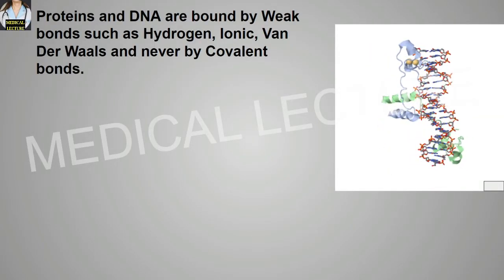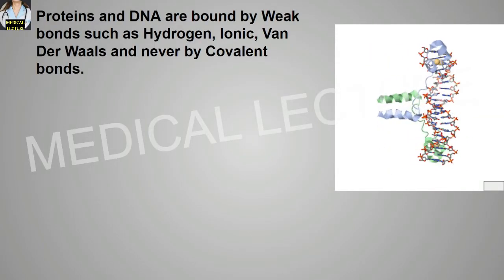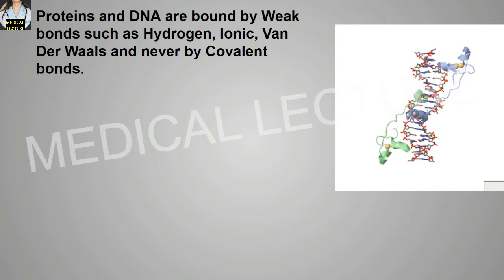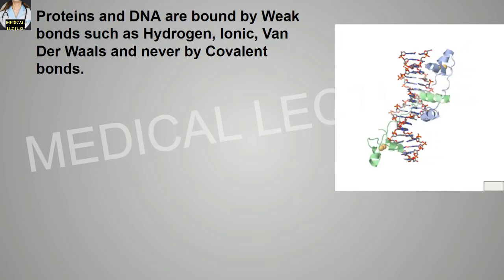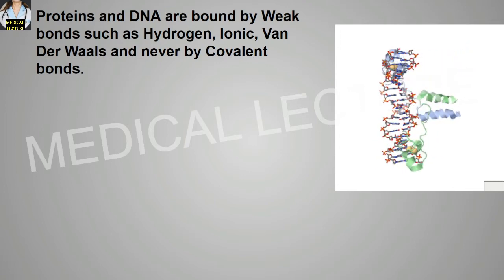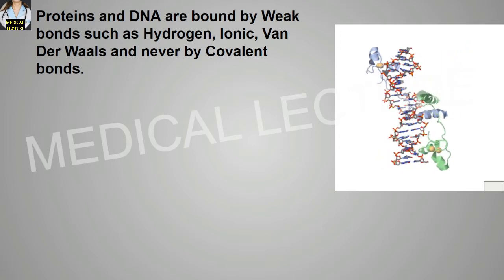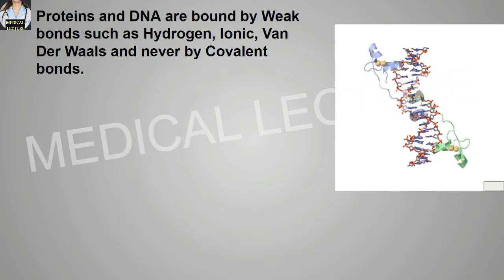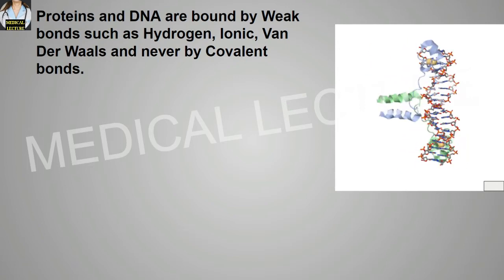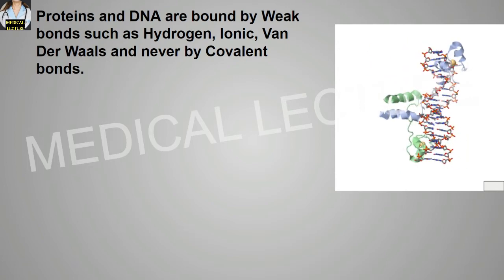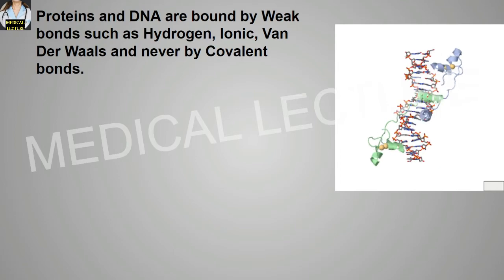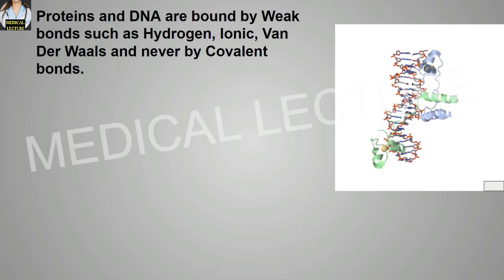Proteins and DNAs are bound by weak bonds such as the hydrogen bond, ionic bond, and van der Waals forces. They are never bound by covalent bonds because covalent bonds are very strong bonds, whereas proteins and DNA are actually bounded by weak bonds.